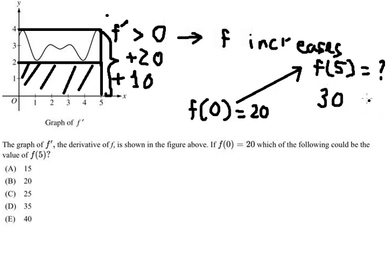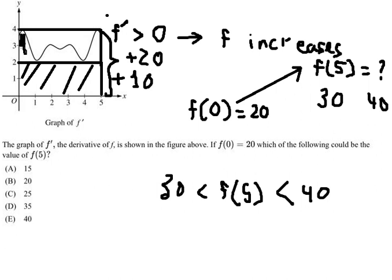We find that f of five should be between 30 and 40. We're finding the approximation using the area below this curve. This represents the value increase from zero to five.